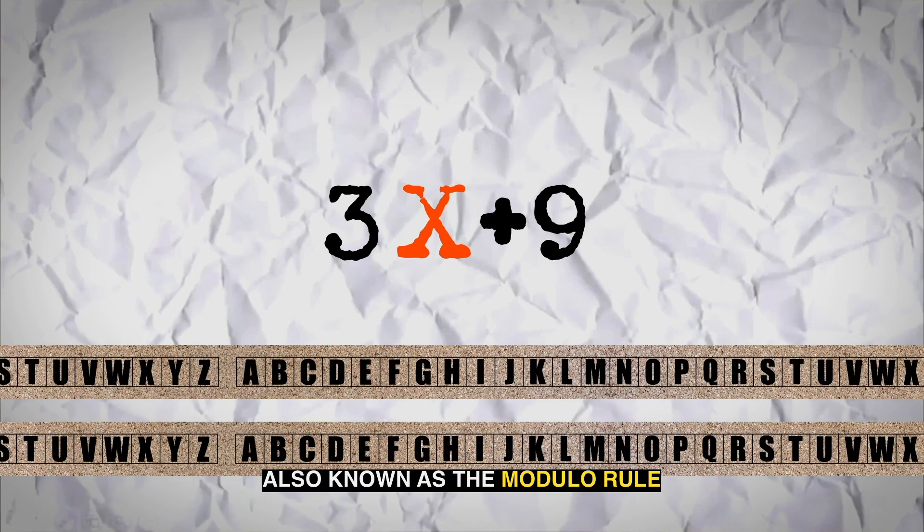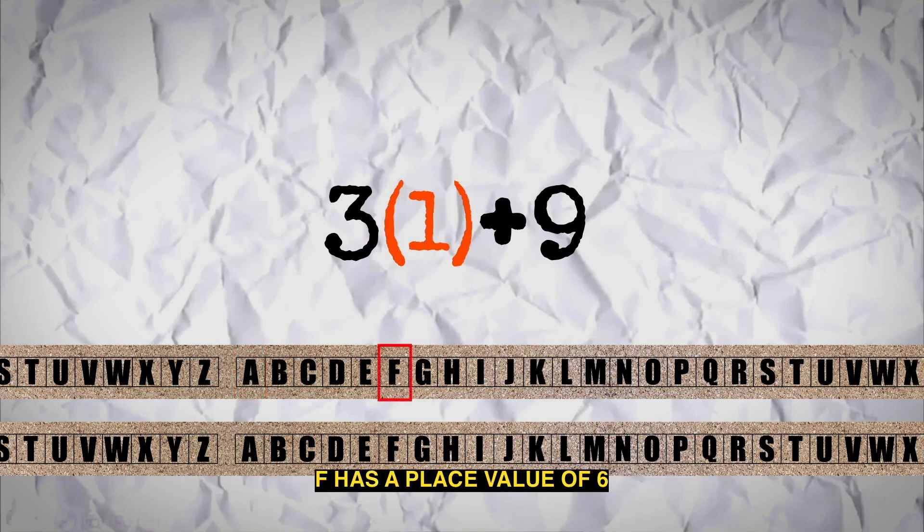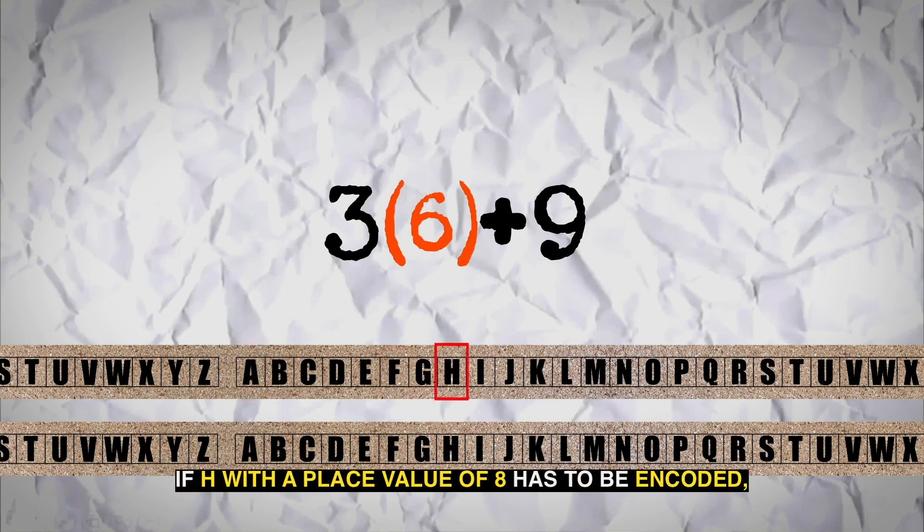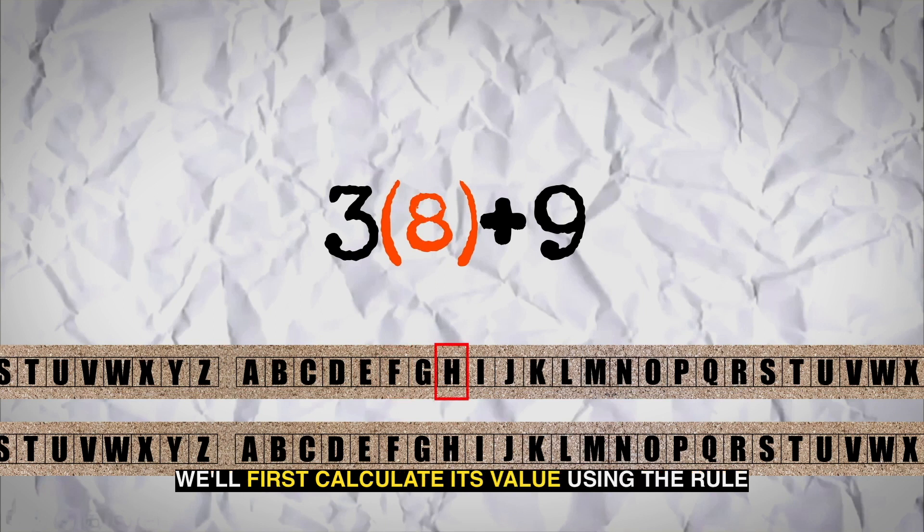Also known as the modulo rule. Going by this rule, A has a place value of 1, F has a place value of 6. If H with a place value of 8 has to be encoded, we'll first calculate its value using the rule.